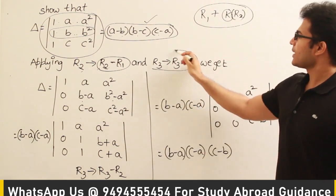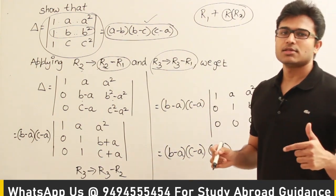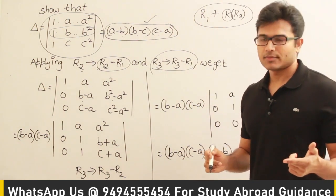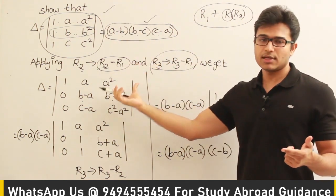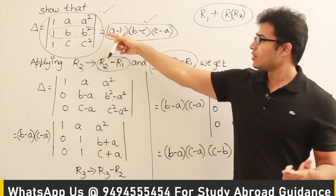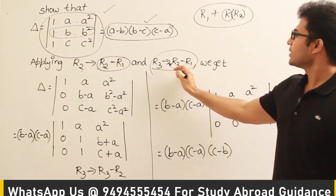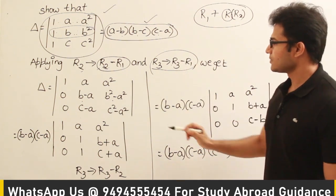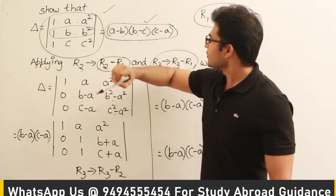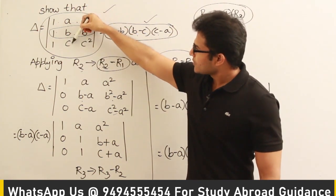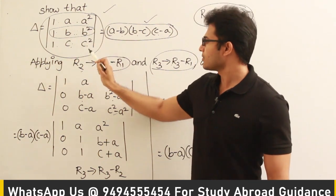And in place of R3 I am going to substitute with R3 minus R1. We can do any such number of operations - we can take the original determinant and do any such operations and then get the next determinant, and the value of these two determinants will be same. Now R3 equal to R3 minus R1, which means in place of R3 also I am going to substitute R3 minus R1. So from this I will subtract this, I will get 0 here, and then c minus a and c² minus a².